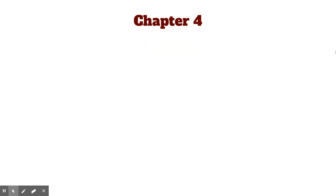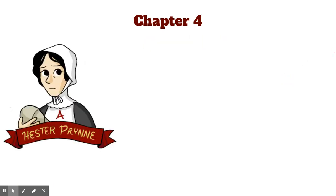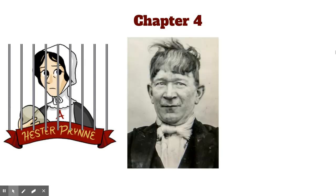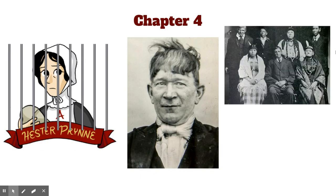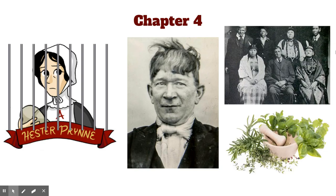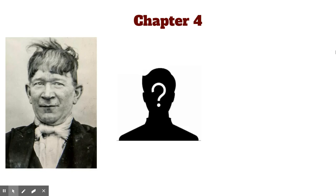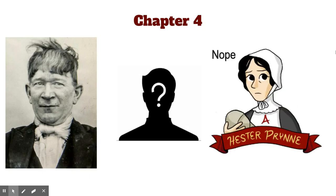Chapter 4. A doctor named Roger Chillingworth visits Hester in prison to treat her baby. He's the weird stranger from Chapter 3, and surprise — Hester's missing husband. Turns out he got lost on the way to Massachusetts and was taken in by American Indians, from whom he learned all kinds of mystical medicine and a bit of magic. Chillingworth also tries to get Hester to tell him the name of the baby's father, but Hester still refuses. He assures Hester that he has no intent to harm her, but he vows to find out who the father is so he can get revenge against him.